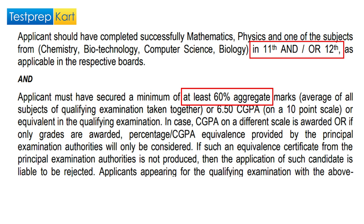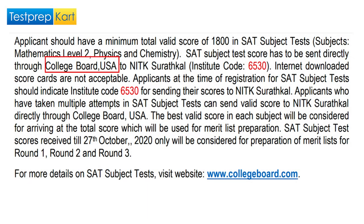Applicants must have secured a minimum of 60% aggregate marks — average of all subjects in the qualifying examination taken together — or a CGPA of 6.50 on a 10-point scale, or equivalent. For NRI students or USA board applicants, a minimum total valid score of 1800 in SAT Subject Tests — Mathematics Level 1 or Level 2, Physics, and Chemistry — is required. SAT scores must be sent directly through College Board USA.